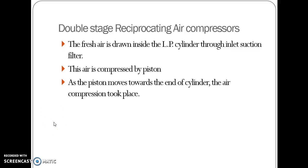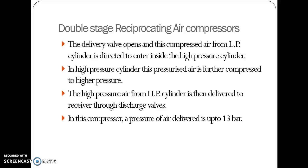The double stage reciprocating air compressor draws fresh air into the low pressure cylinder through an inlet suction filter. The air is compressed by the piston as it moves toward the top dead center. The delivery valve opens and this compressed air from the low pressure cylinder is directed into the high pressure cylinder, where it is further compressed to higher pressure. The higher pressure air is then delivered to the reservoir through discharge valves. This compressor delivers a pressure of up to 13 bar, compared to only 7 bar in a single stage reciprocating air compressor.